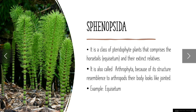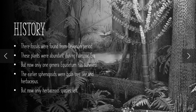History of Phenopsida: their fossils were found from the Devonian period. These plants were abundant during the Palaeozoic era, but now only one genus, Equisetum, has survived. The earlier Phenopsida were both tree-like and herbaceous, but now only herbaceous species are left.